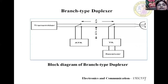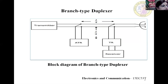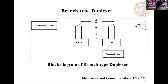Here you can see the block diagram of the branch type duplexer. Whenever a single antenna is used for both transmitting and receiving, as in a radar system, problems arise — switching the antenna between transmit and receive modes presents one problem, and ensuring maximum use of available energy presents another. The simplest solution is to use a switch to transfer the antenna connection from the receiver to the transmitter during the transmitted pulse and back during the echo pulse. No practical mechanical switches can open and close in a few microseconds, so electronic switches must be used.